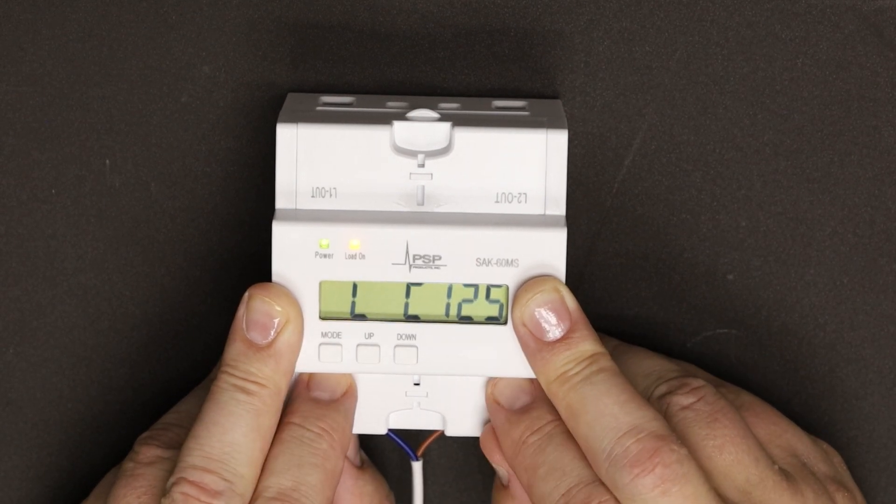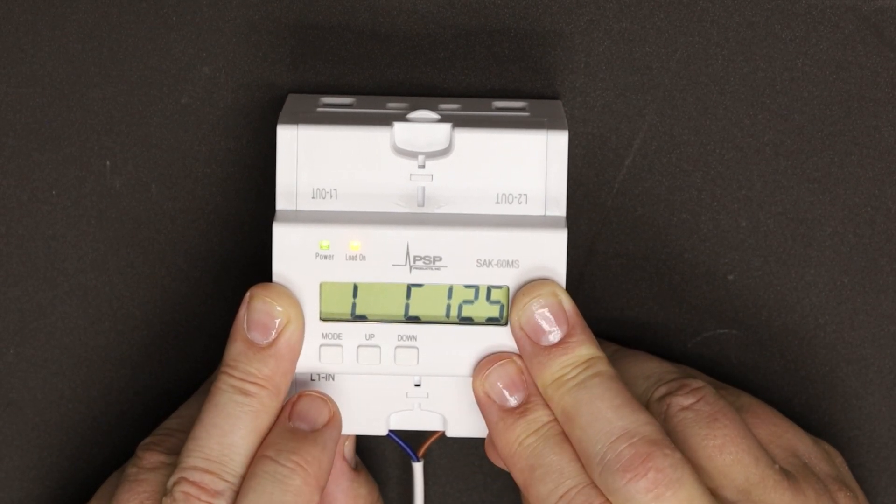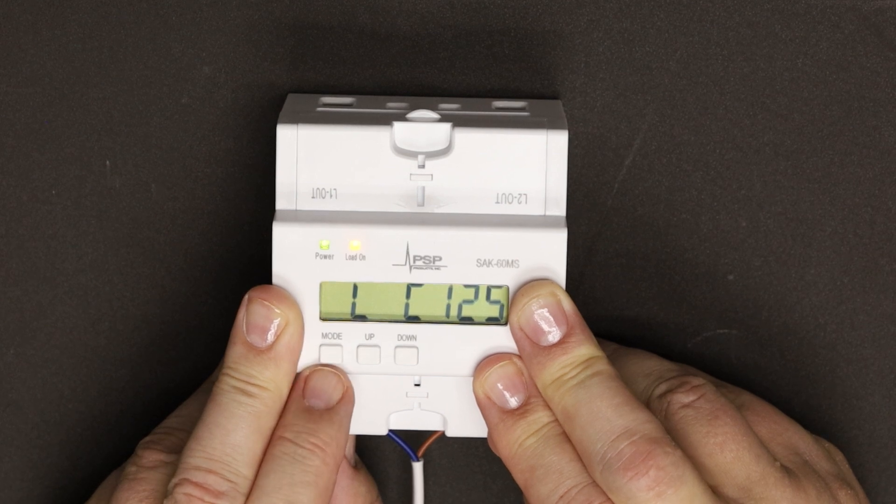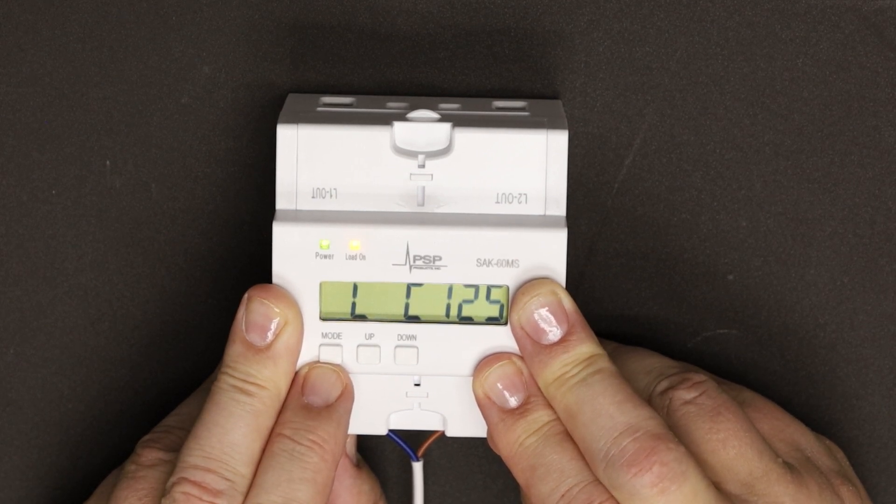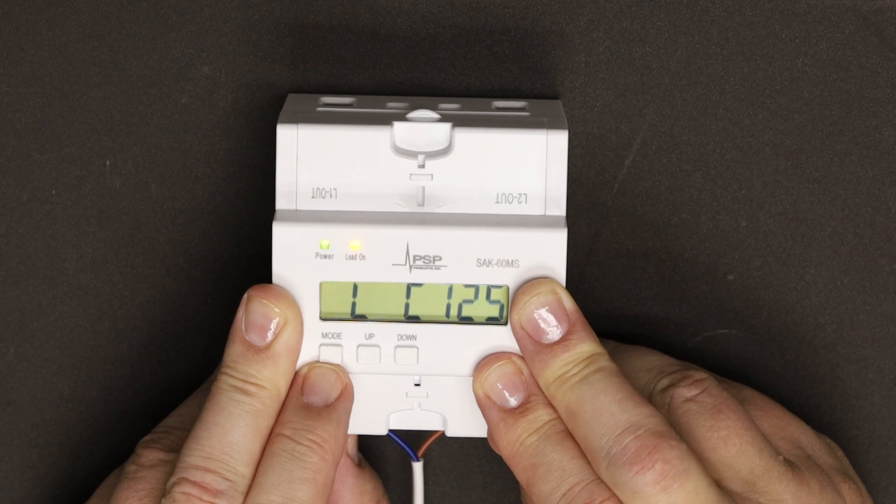LC is the low current set point, though your instructions might say load control, and this is the ampacity at which the load will be restored. I've assumed a 35-amp load.